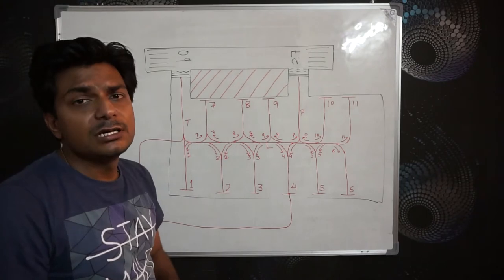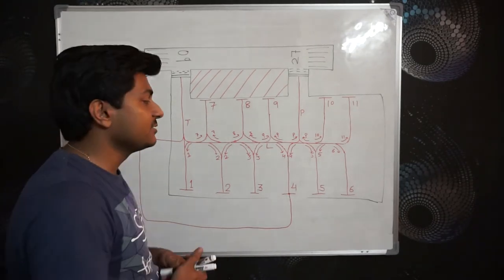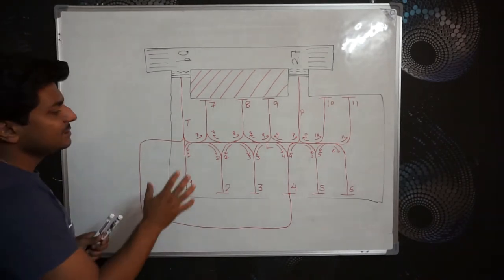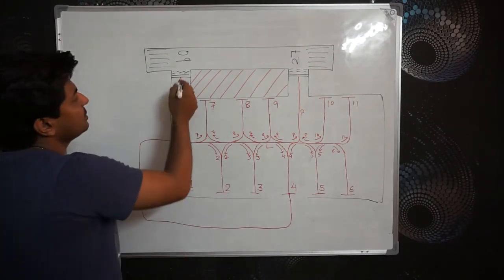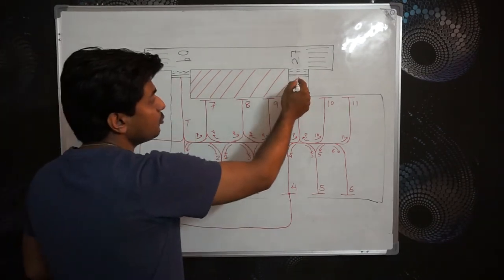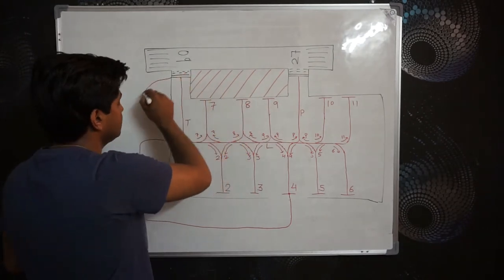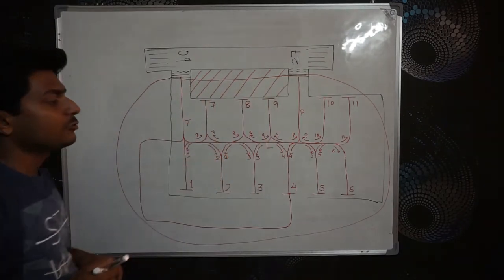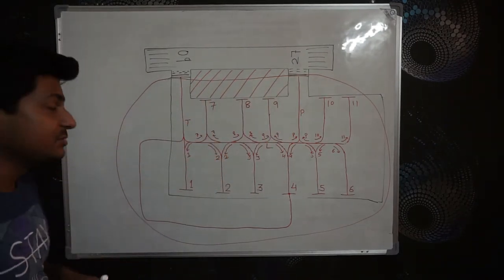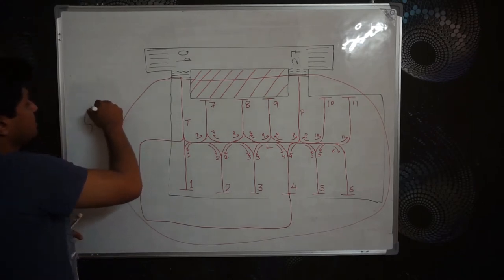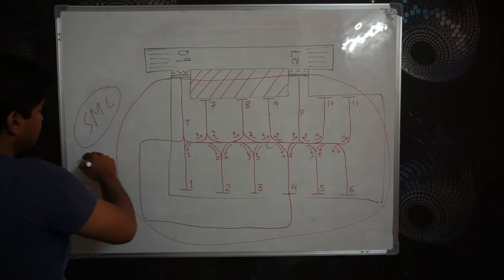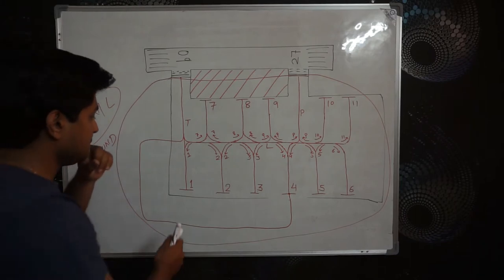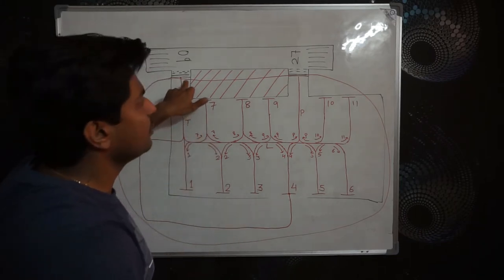In a powered bay, you don't need to get permission for pushback — you only need to take startup clearance. From here up to the runway holding point, the whole area is controlled by SMC, or what we generally call Ground, which is the ATC's lowest unit. You have to take permission from Ground for startup, pushback, and taxi up to the runway holding point.